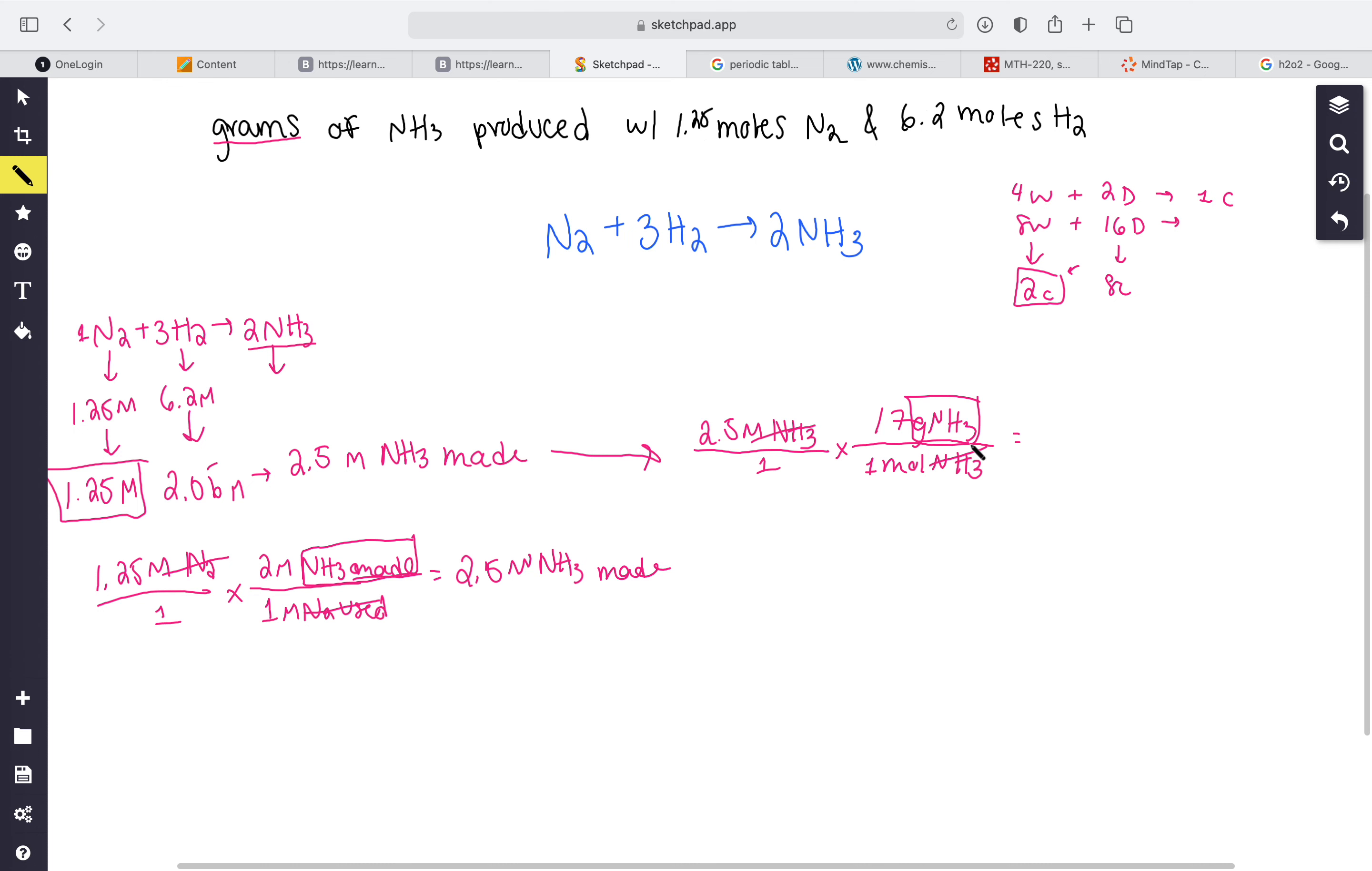2.5 times 17, we're going to get 42.5 grams of NH3. Our least significant digit that we were given was two significant figures, so technically it really should be 43 grams of NH3.